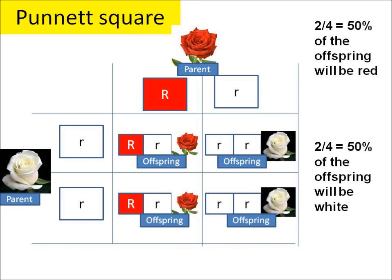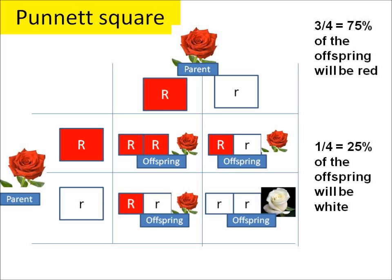Using a Punnett square, we can predict the probability of whether offspring will be red or white. In this example, one parent is big R little r and is red, and one parent is little r little r and is white. We can see that two out of four offspring will be big R little r and will be red, because red is dominant, and two out of four will be little r little r and will be white.